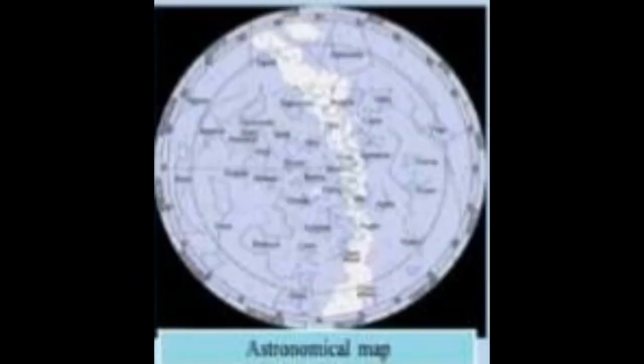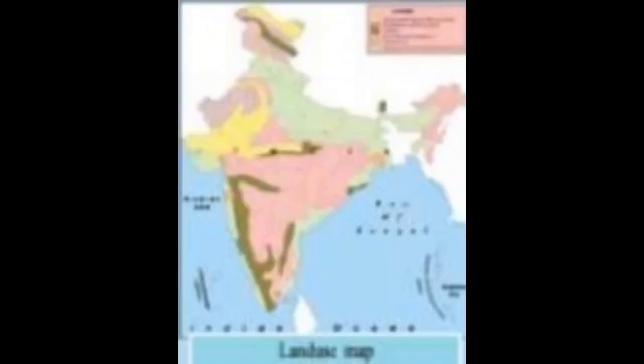An astronomical map is used for the study of celestial bodies. A land use map is used for understanding land use. A weather map is used for meteorological studies, etc.